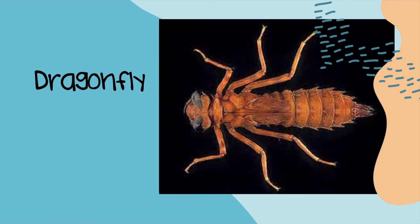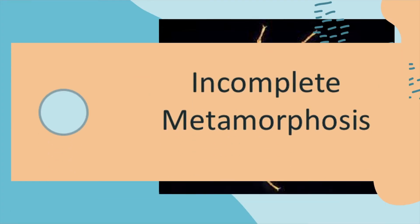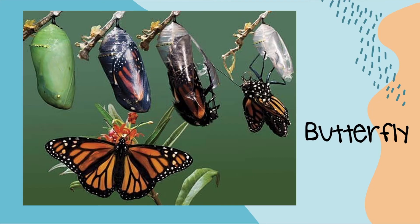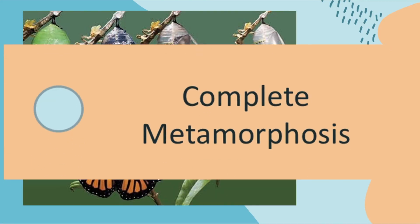What about a dragonfly? A dragonfly is the state insect of Alaska, if you didn't know that before. Complete or incomplete metamorphosis? If you said incomplete metamorphosis, you are correct. The next one is the butterfly. Complete or incomplete metamorphosis? If you said complete metamorphosis, you are correct. Great job.